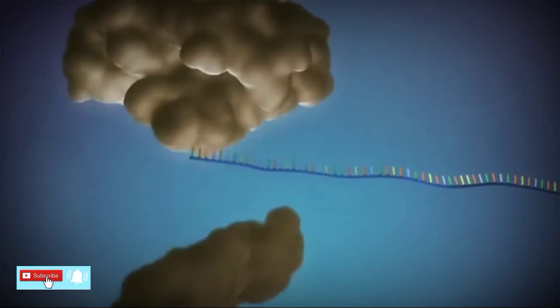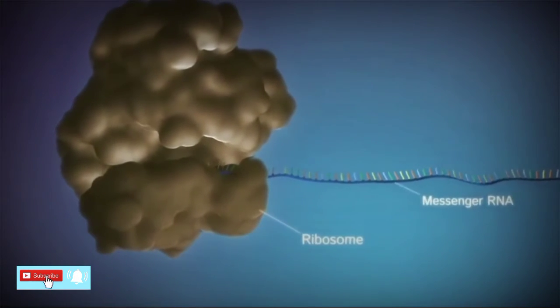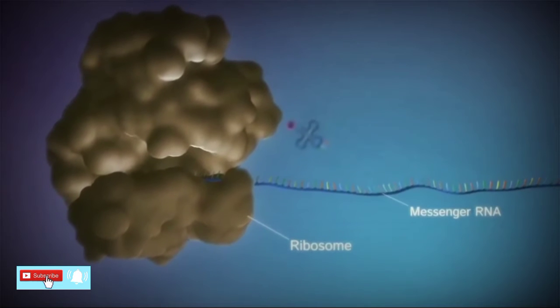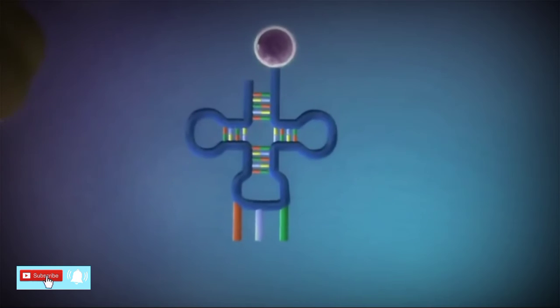Protein factories in the cytoplasm, called ribosomes, bind to the messenger RNA. The ribosome reads the code in the messenger RNA to produce a chain made up of amino acids.